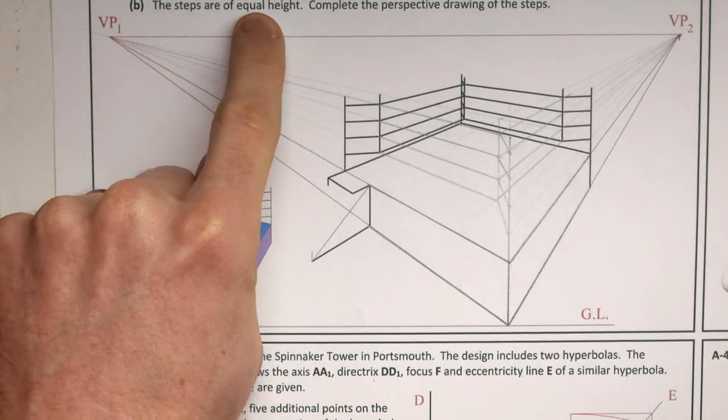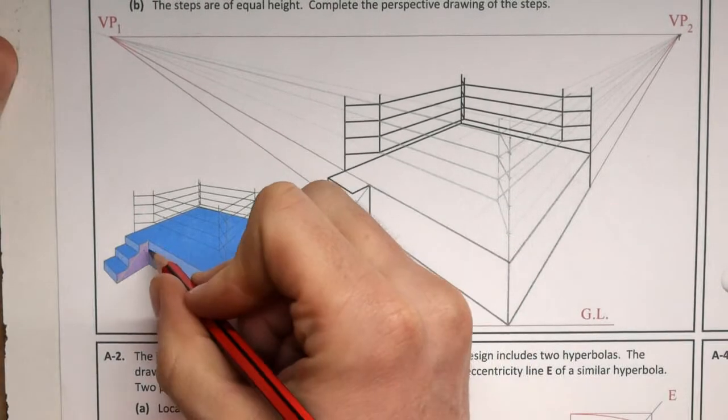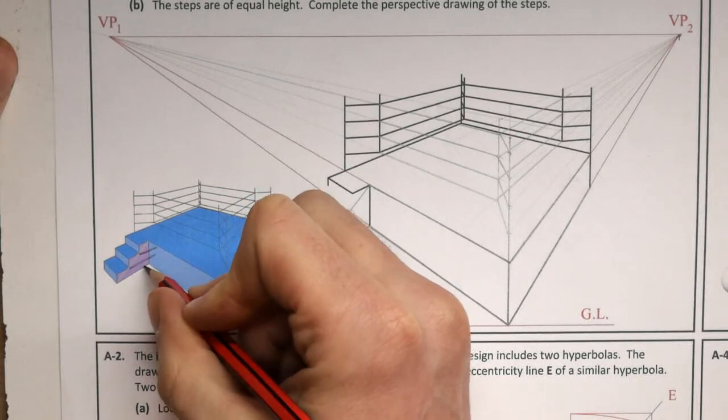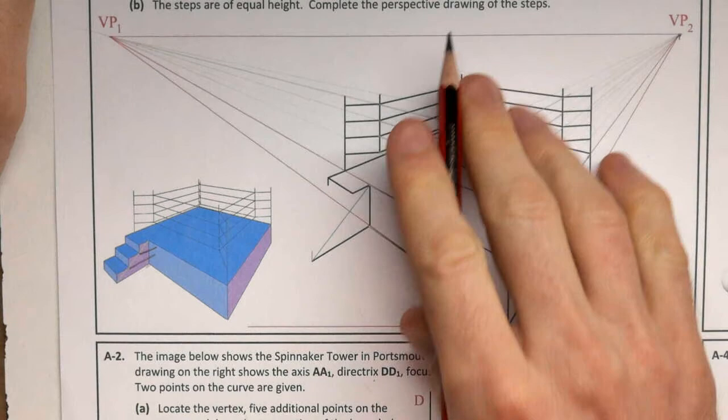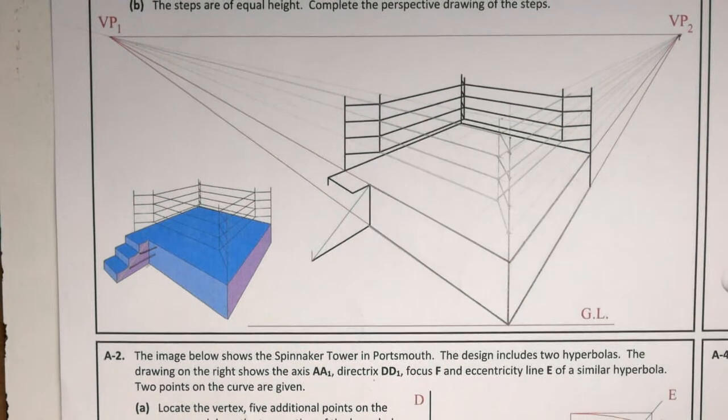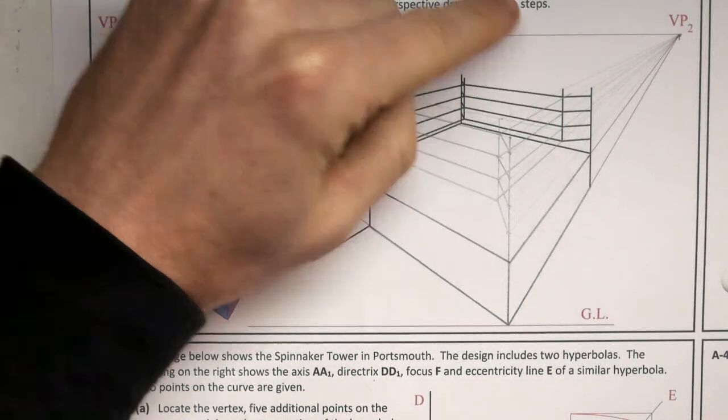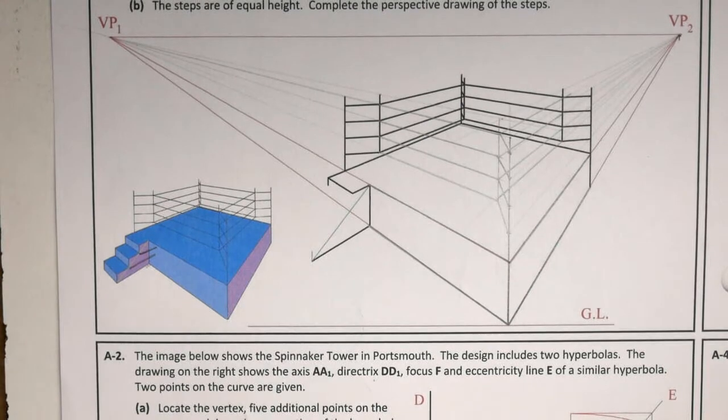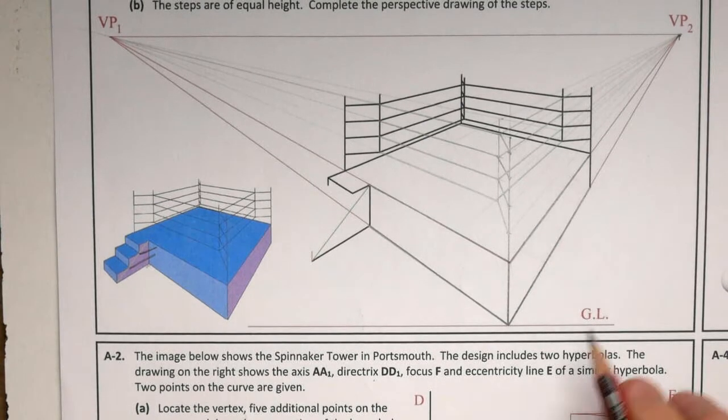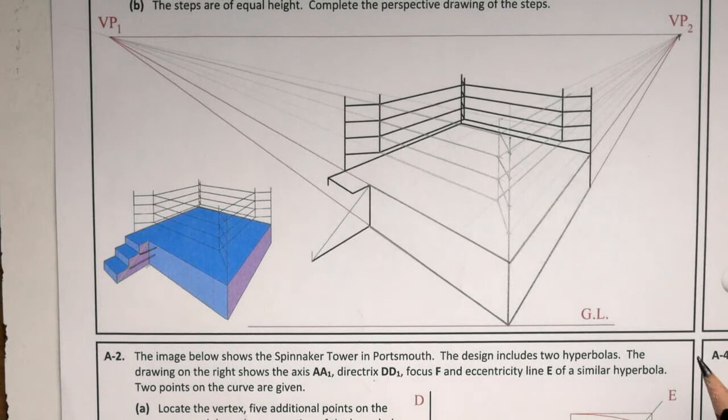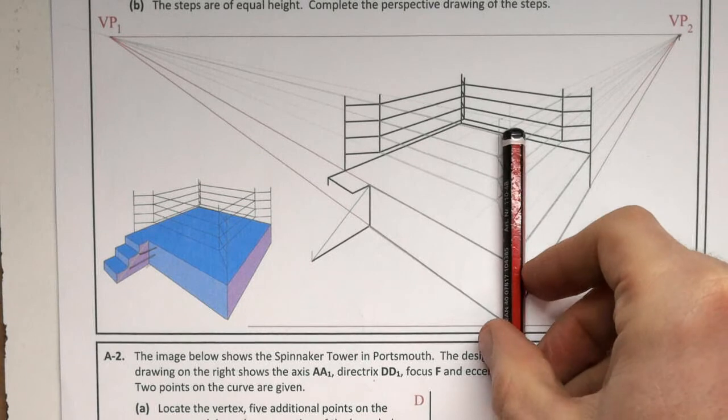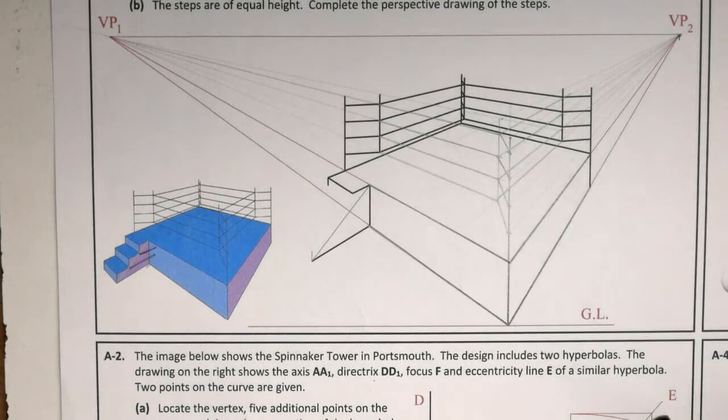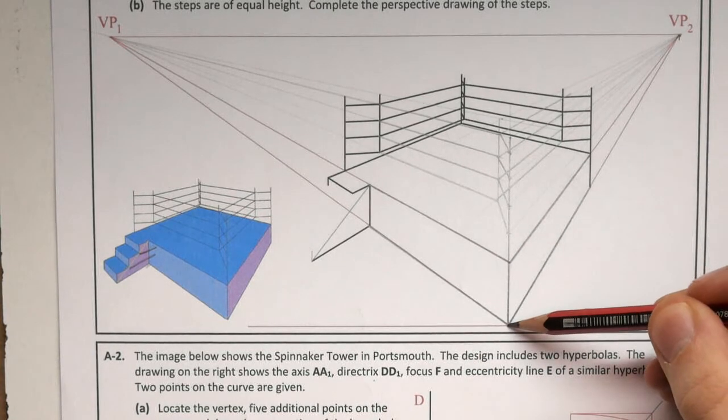Then, the steps are of equal height. So each one of these are of equal height. Complete the perspective drawing of the steps. I need to think about is there anywhere on this drawing that I have a true height line. And that would be this line running up along here because it comes down and it rests on the ground line.